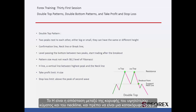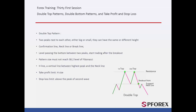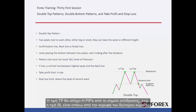H is the distance between the peak of the most elevated wave and the neckline, which must be a vertical line. TP price would be H pips away from the breakout point, while SL price is above the peak of the second wave.